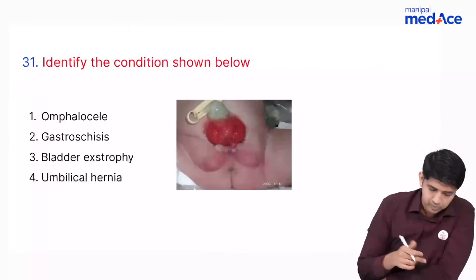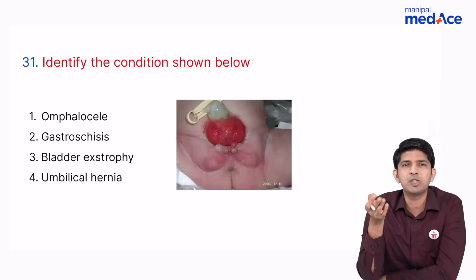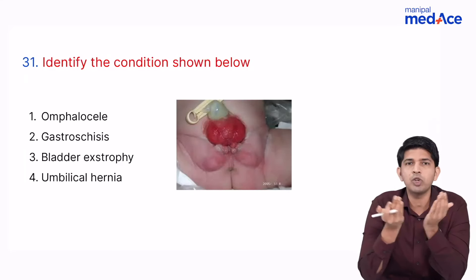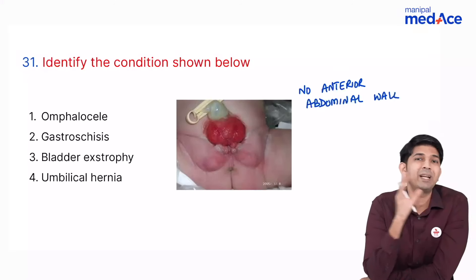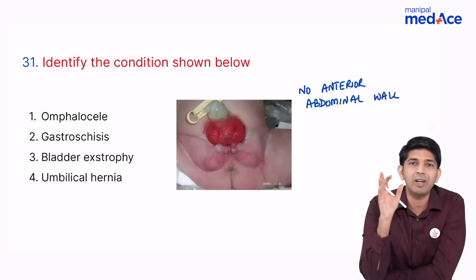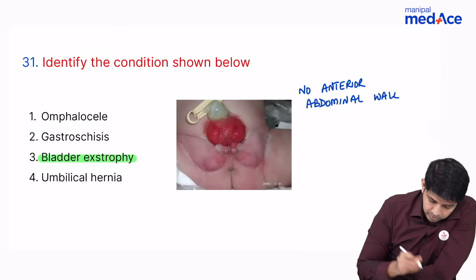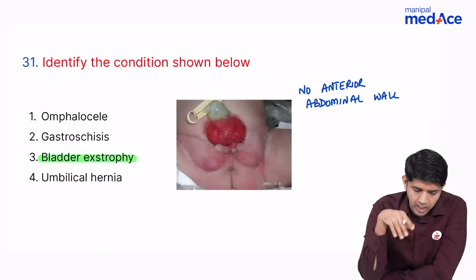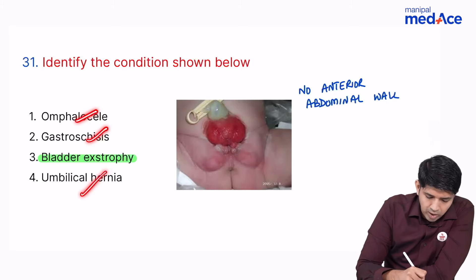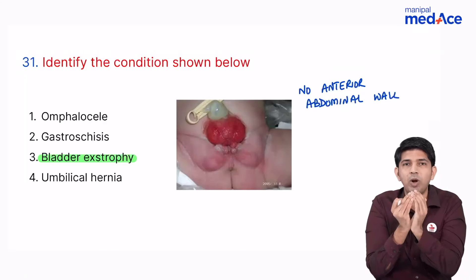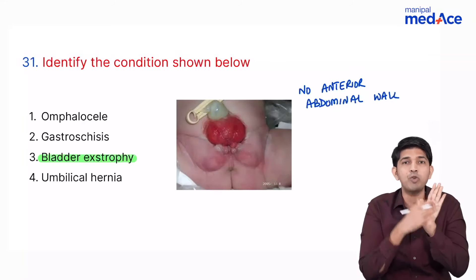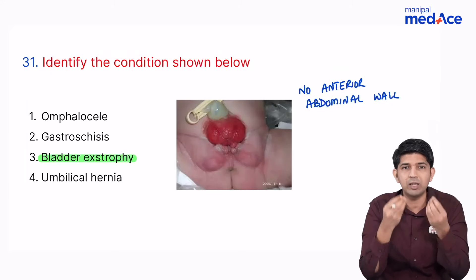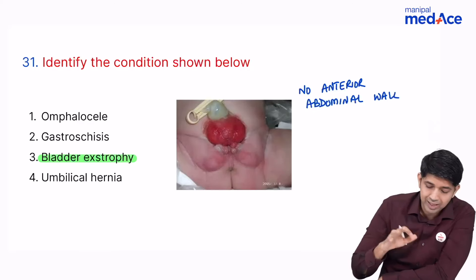An image showed an opened bladder with no anterior abdominal wall — part of the epispadias complex. This condition is bladder exstrophy (ectopic vesicle), where the anterior abdominal wall is not formed and you see directly the posterior layer of the bladder, with ureteric openings visible and urine dribbling out. In omphalocele, gastroschisis, or umbilical hernia, the anterior wall is formed with a defect — not absent. The answer is bladder exstrophy.